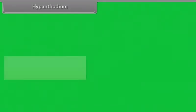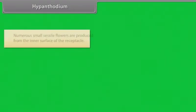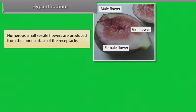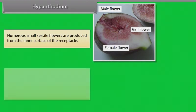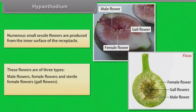In hypanthodium, the receptacle becomes spherical with a cavity inside and opens to the outside with a small opening. Numerous small sessile flowers are produced from the inner surface of the receptacle. These flowers are of three types: male flowers, female flowers, and sterile female flowers (gall flowers). Example: Ficus.